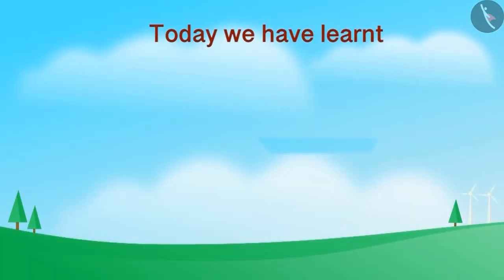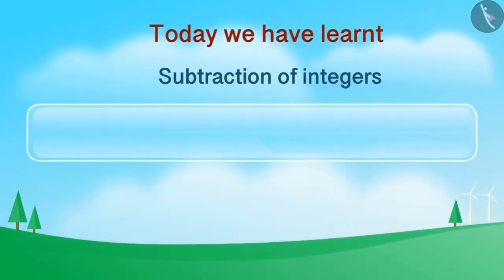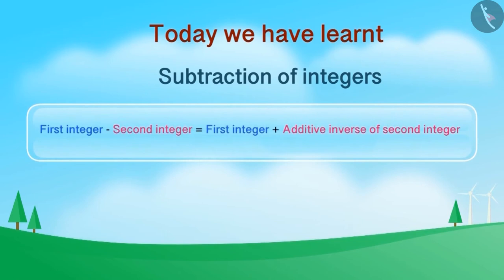Today, we have learnt that whenever we need to subtract one integer from another integer, we need to add the additive inverse of the integer that is being subtracted to the first integer.